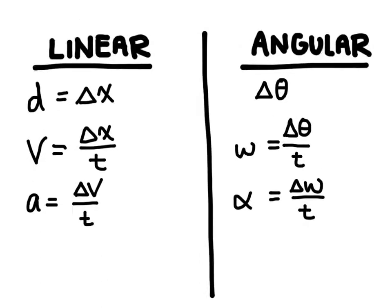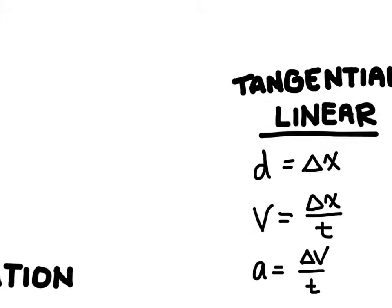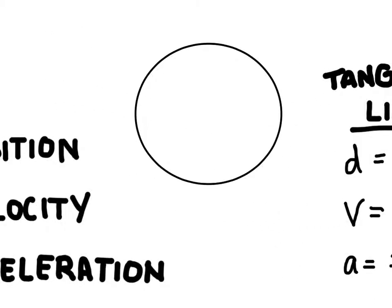Now, when we're converting between the two like that, we call the linear equivalent of angular motion tangential motion. The word tangent refers to a line that's drawn that's just touching the edge of the circle. And so the angular motion would be traveling around the circle.